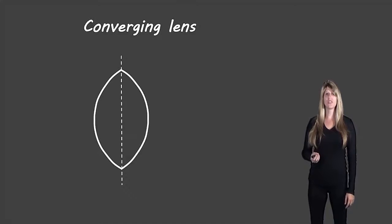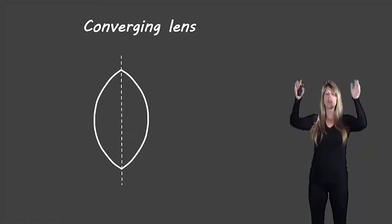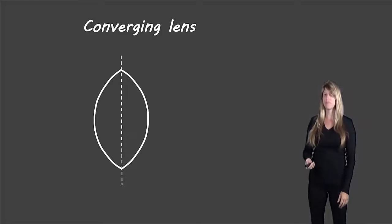So we'll start off with the converging lenses. Converging lenses are skinny on the top and bottom and they bow out around the middle. So they're skinny at the top, wide in the middle and then skinny at the bottom again. So this is an example of a converging lens.